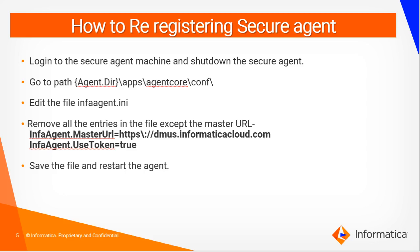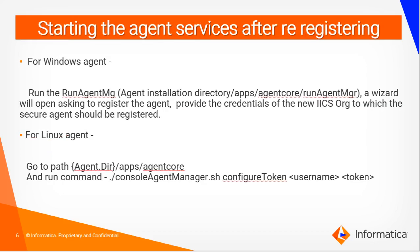Basically, you are removing all the entries in the infra-agent configuration file that are pointing to the current organization. Once you save the infra-agent.ini file, you will need to start the agent services and register it with the new IACS org to which you are looking to point the secure agent.